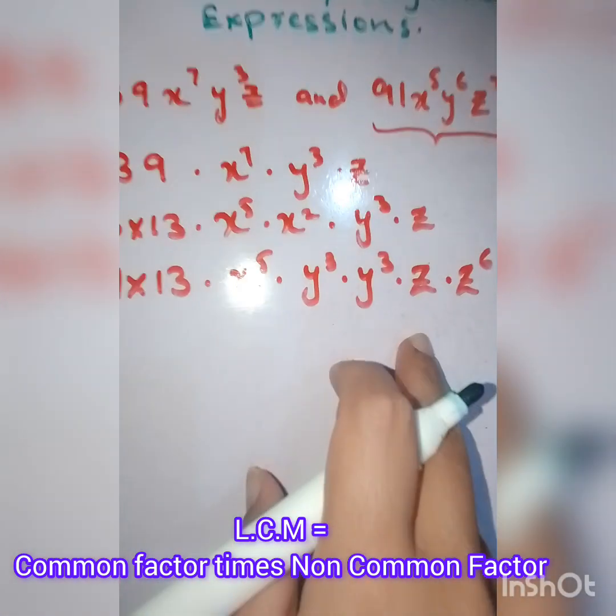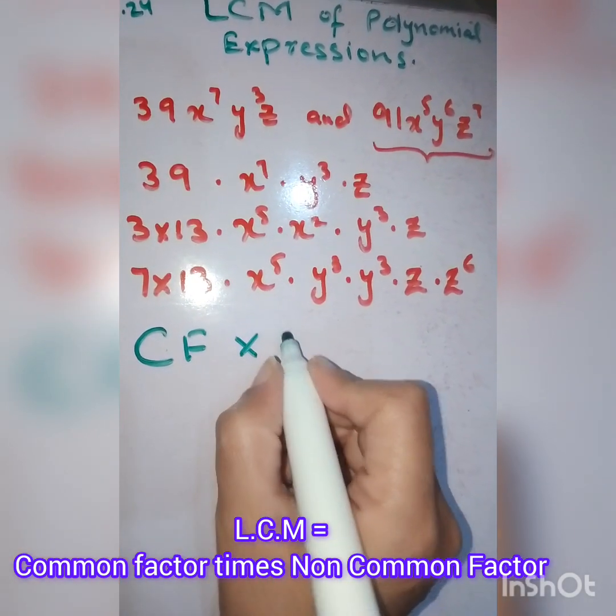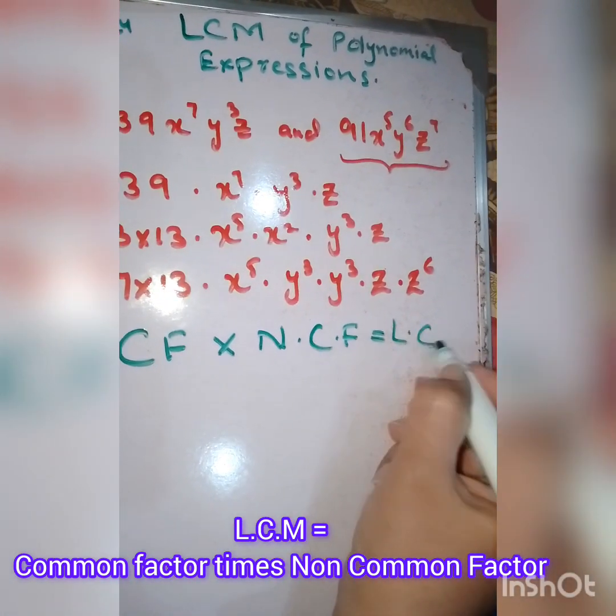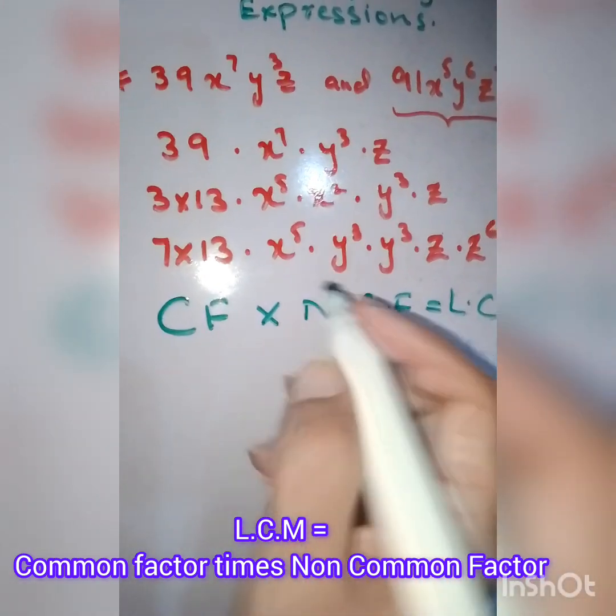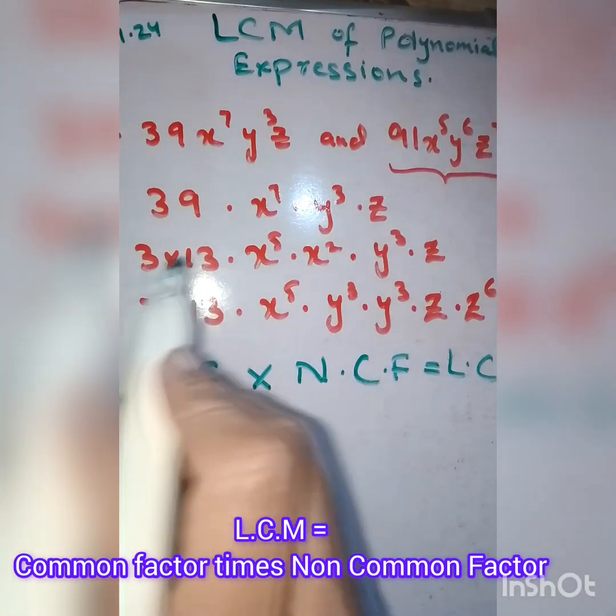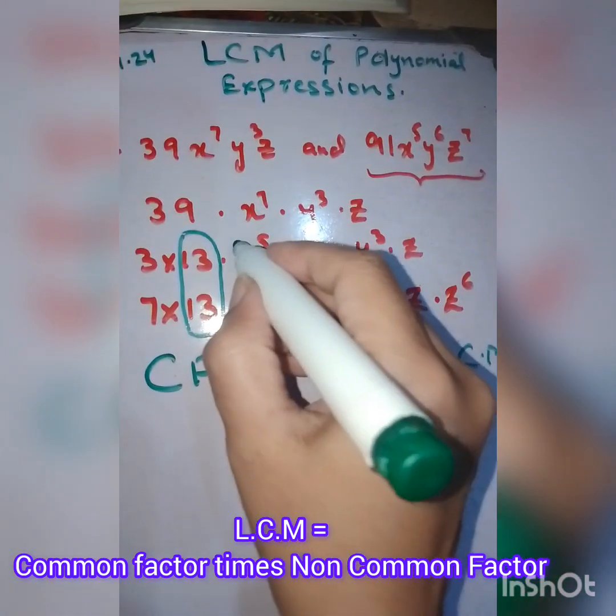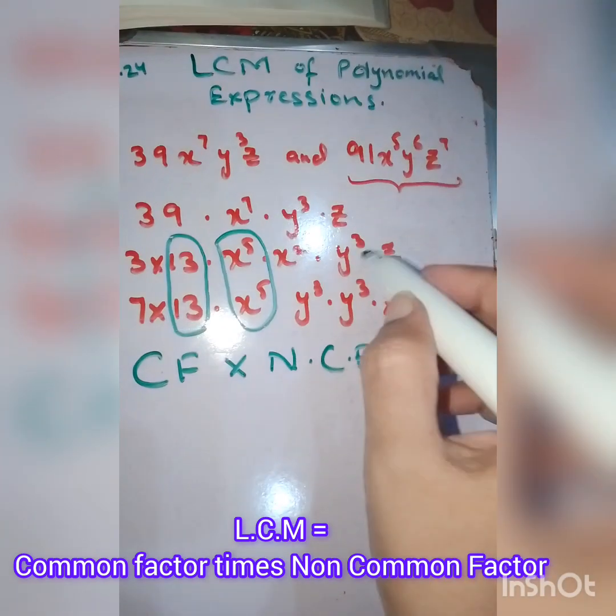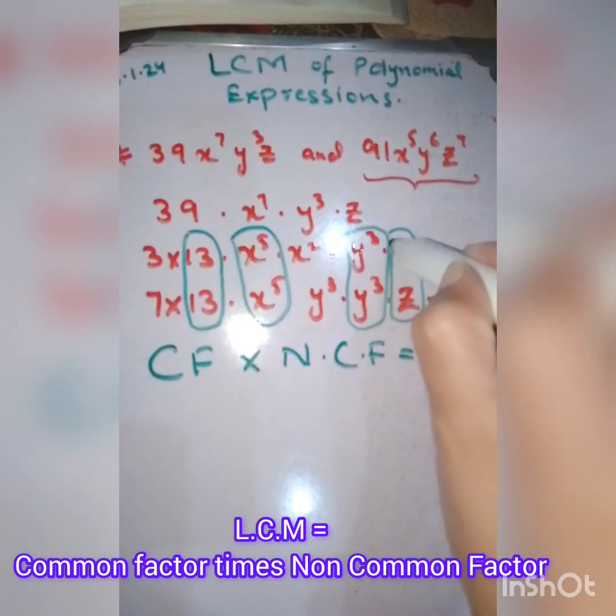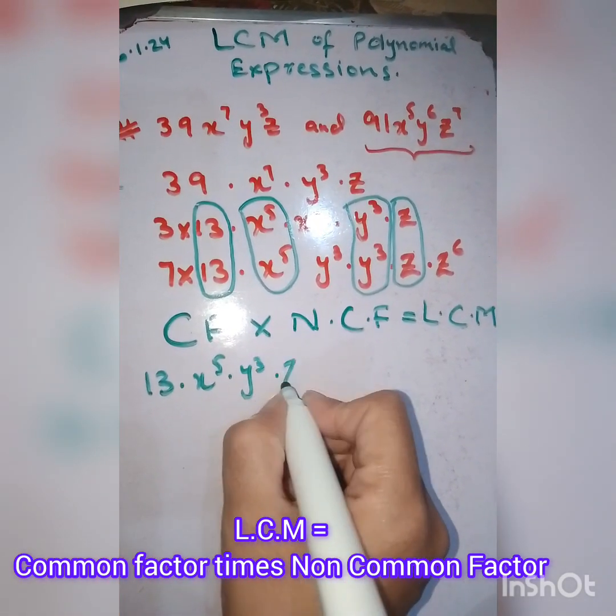After getting it done in factor form, we know that the LCM is the product of common factors and non-common factors. We are going to mark the common ones first: 13 and 13, x^5, y^3, and z. So first write the common ones: 13 · x^5 · y^3 · z.